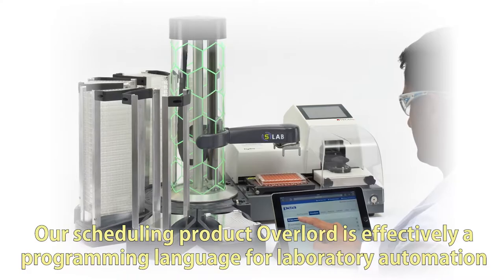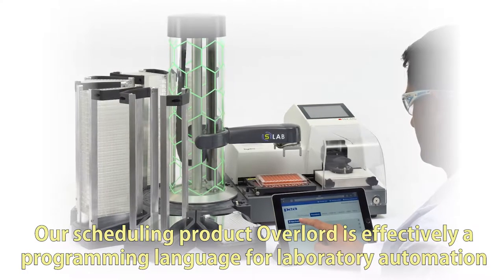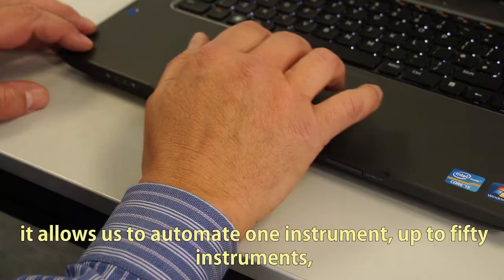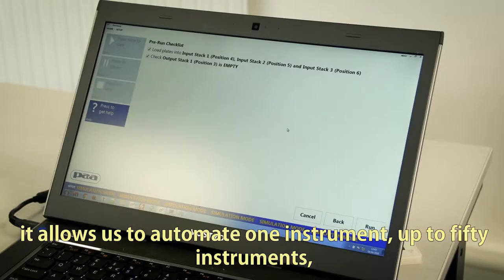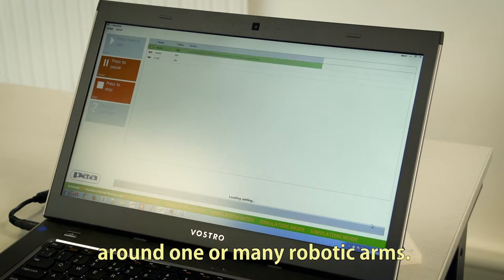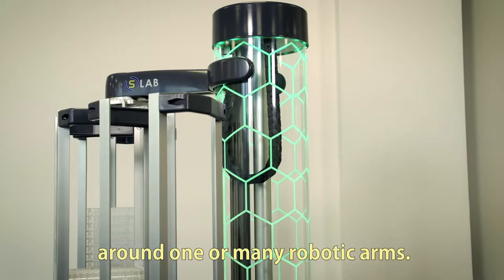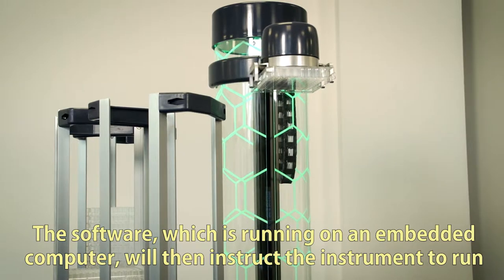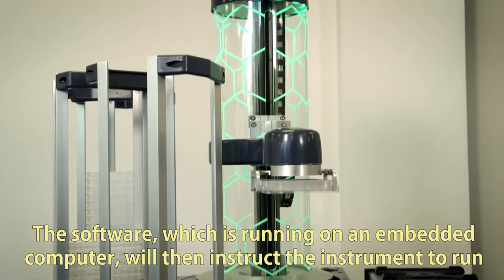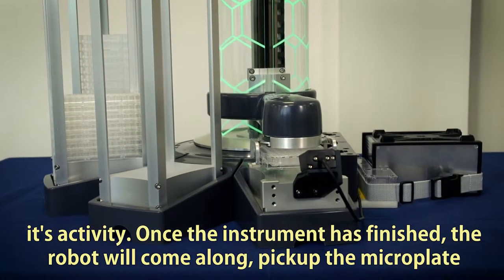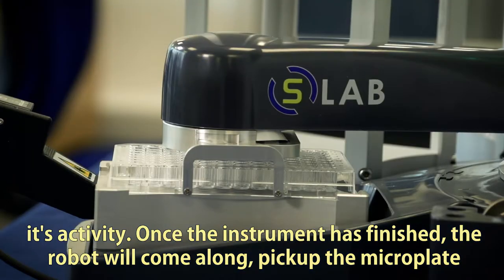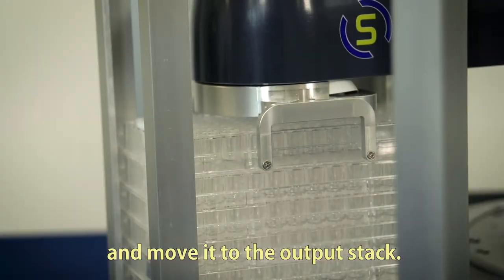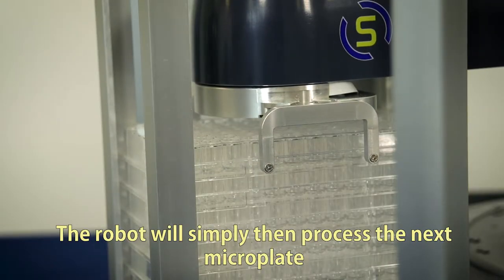Our scheduling product, Overlord, is effectively a programming language for laboratory automation. It allows us to automate one instrument up to 50 instruments around one or many robotic arms. The software, which is running on an embedded computer, will instruct the instrument to run its activity. Once the instrument has finished, the robot will pick up the microplate and move it to the output stack.